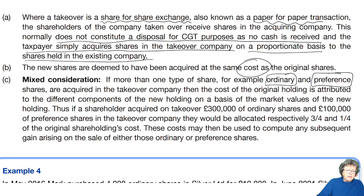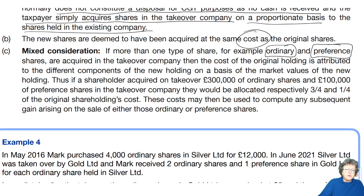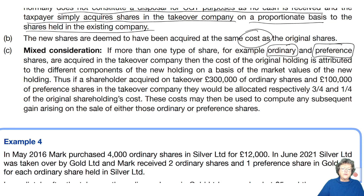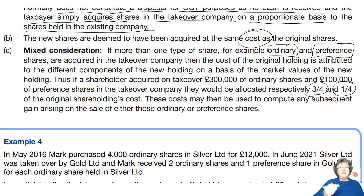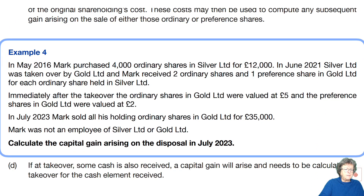There's an example here. If a shareholder acquired at takeover £300,000 of ordinary and £100,000 of preference shares, then they have to allocate that cost accordingly. There's a way of doing this that I'm going to show you — it's quite logical. As long as you follow the kind of questions that come up and work through it logically and use your common sense, you should be okay. We're going to have a look at example number four.